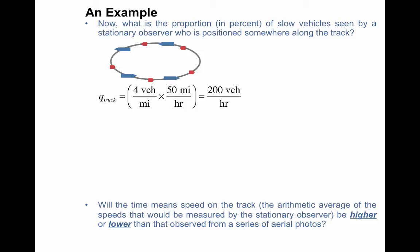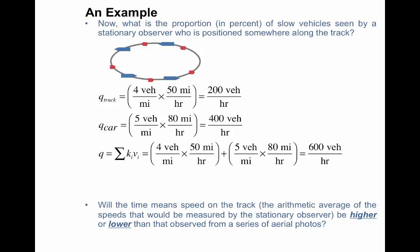So first we're going to calculate the flow of each vehicle class. And so remember that the flow is the density times speed. And so for the truck class, the density is four vehicles per mile, the speed is 50 miles per hour. So the truck flow to a stationary observer is 200 vehicles per hour. The flow of the car class is just the density times the speed. Five fast cars times 80 miles per hour is 400 vehicles per hour. So the flows are also additive. So the total flow is 600 vehicles per hour.